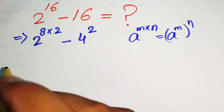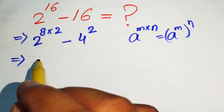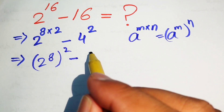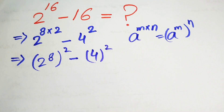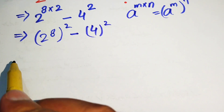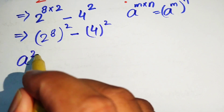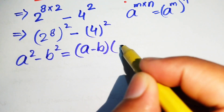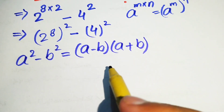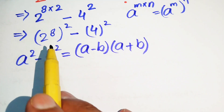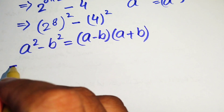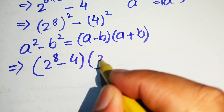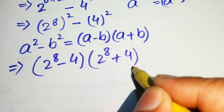We write this algebraic expression as 2 to the power of 8, whole squared, minus 4 squared. After this step we use the algebraic identity: a squared minus b squared equals a minus b times a plus b. Using this identity, our expression will be written as 2 to the power of 8 minus 4, into 2 to the power of 8 plus 4.